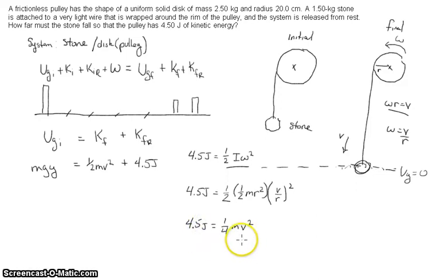We can solve for v here, substitute into our conservation of energy equation, and then solve for y. This here represents the rotational kinetic energy of the disc, the pulley, so we're going to have 4.5 joules is equal to one-fourth times 2.5 kilograms times v squared.